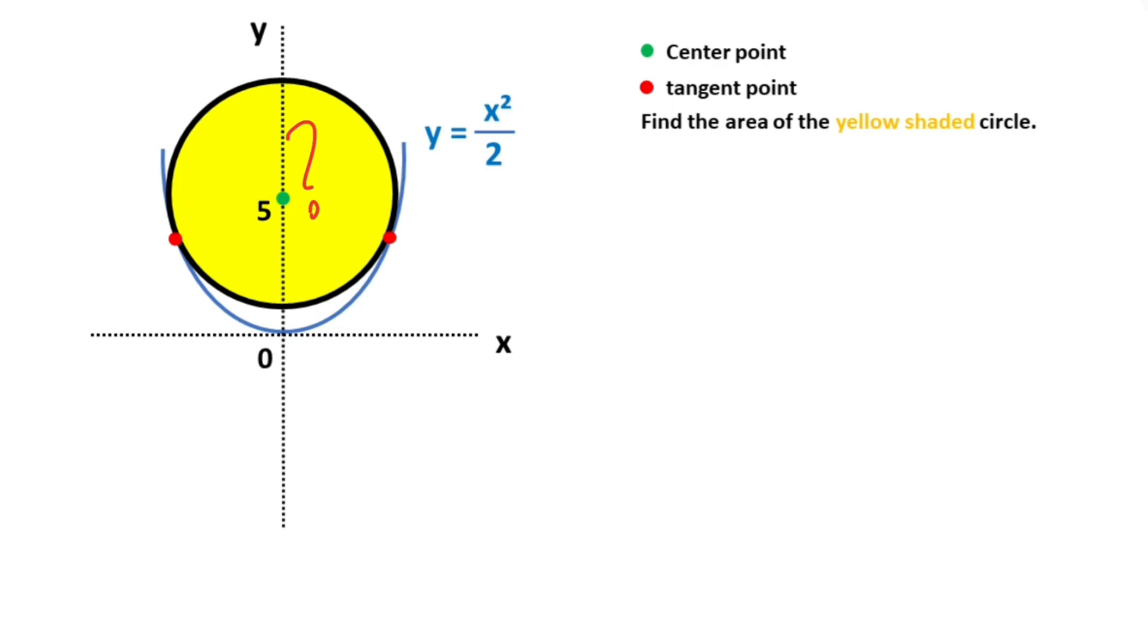We know that the coordinates of the center of the circle are (0, 5). Therefore, if you write the equation of the yellow circle, x minus zero whole square plus y minus five whole square equals r squared.